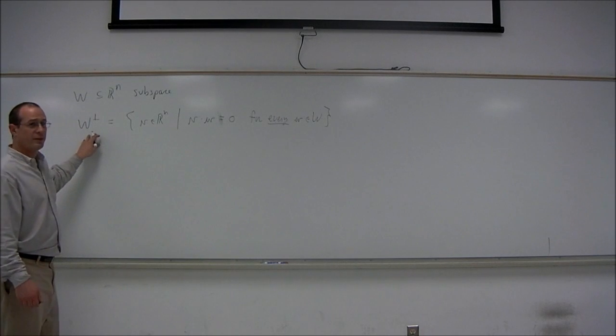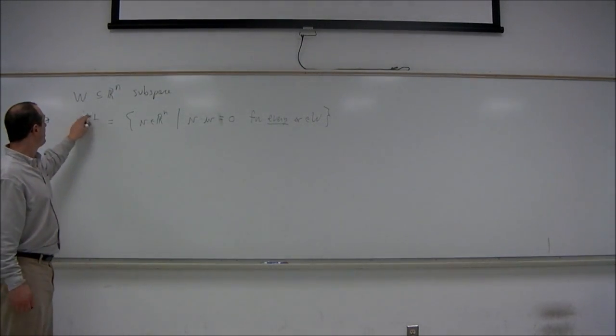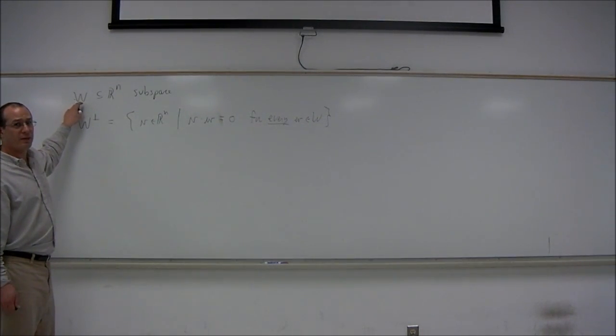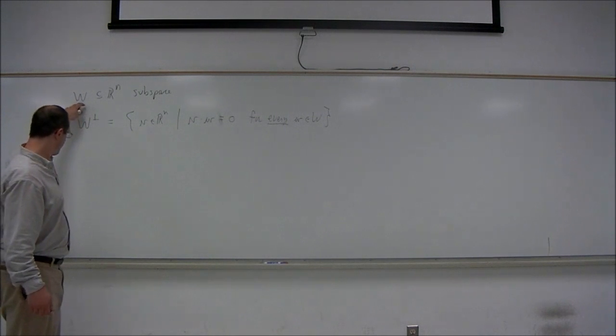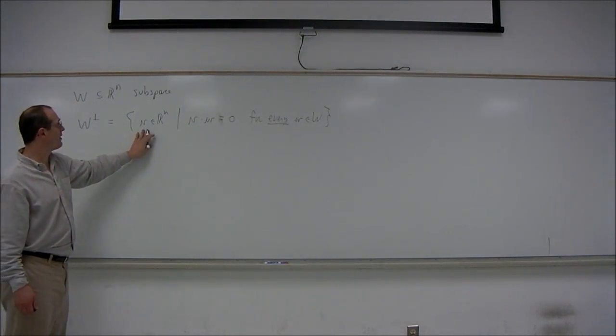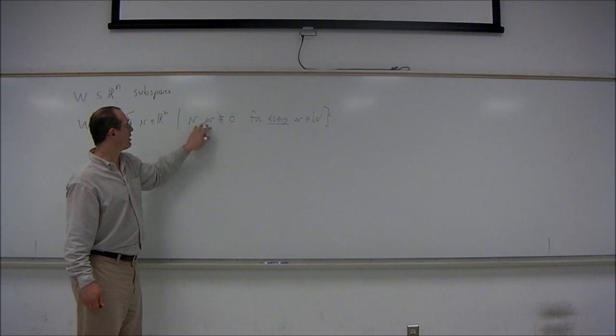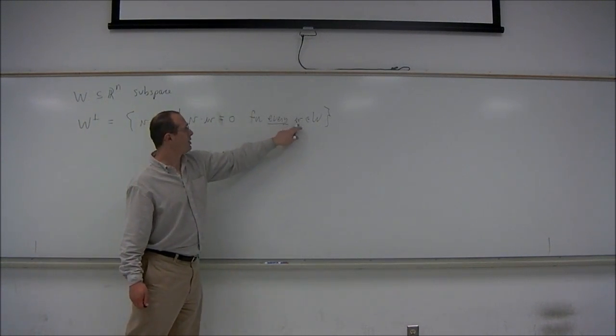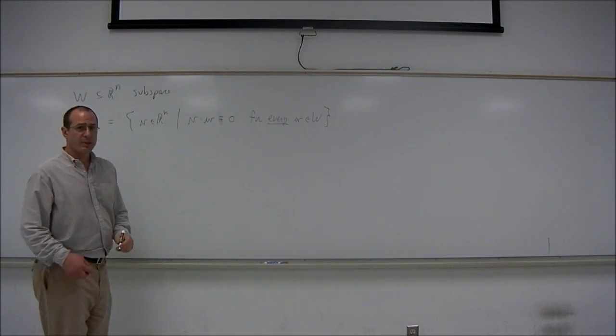So there's our definition. The orthogonal complement of the subspace W is equal to the set of all vectors in R^n which are orthogonal to every vector W in the subspace W.